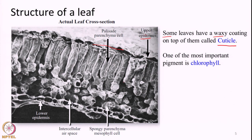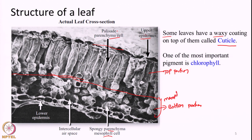Looking at the internal structure, we can observe two different types of cells. On the top half of the leaf there are elongated, lengthy cells. Below, in the bottom portion, the cells present look different — having an irregular shape rather than the elongated shape. The cells in the top portion are called palisade parenchyma cells, and the cells in the bottom portion are called spongy parenchyma mesophyll cells. The top portion is called palisade parenchyma, and the lower portion is called spongy parenchyma.